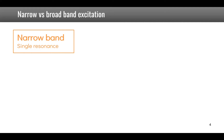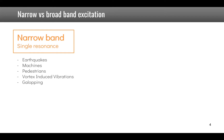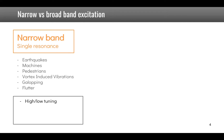By narrow band I mean it is mostly exciting a single resonance of the structure. Examples include earthquakes, which most of the time will only excite the first mode of the structure; machines which run at a certain frequency; pedestrians, which have a main excitation around 2 Hz; and vortex induced vibrations and instabilities like galloping and flutter. Different solutions to these problems can be applied, which will be detailed later.